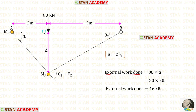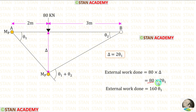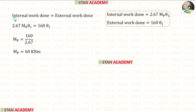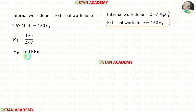For the external work done, we multiply the load 80 kN with height delta. Substituting delta as 2 theta 1, we get 80 × 2 = 160, so the external work done equals 160 theta 1. Equating internal and external work done and eliminating theta 1, taking 2.67 to the denominator, we get Mb equal to 60 kN·m.